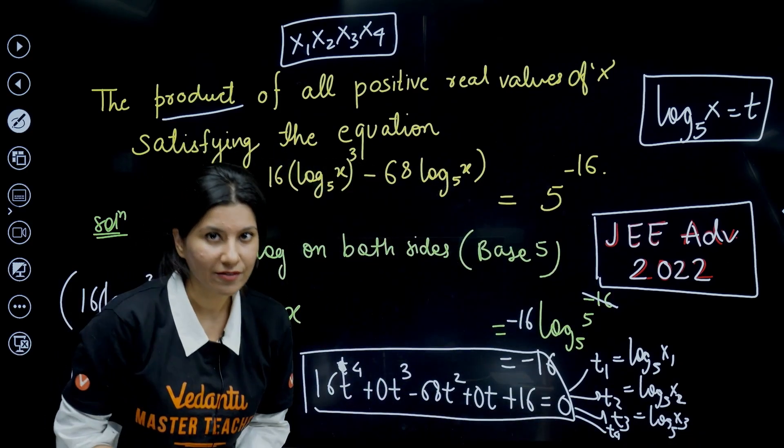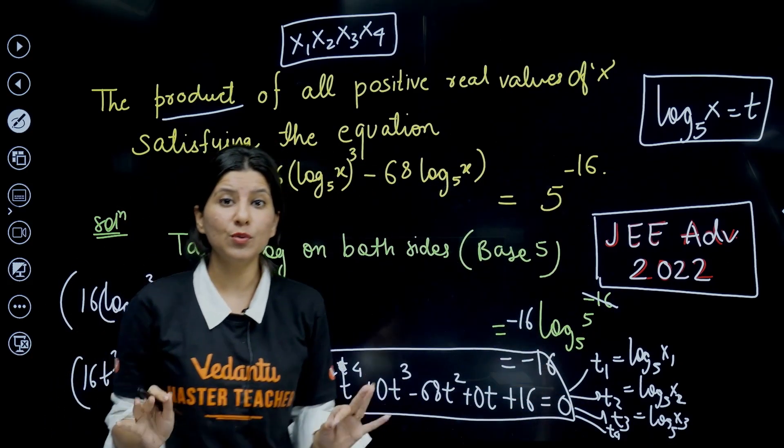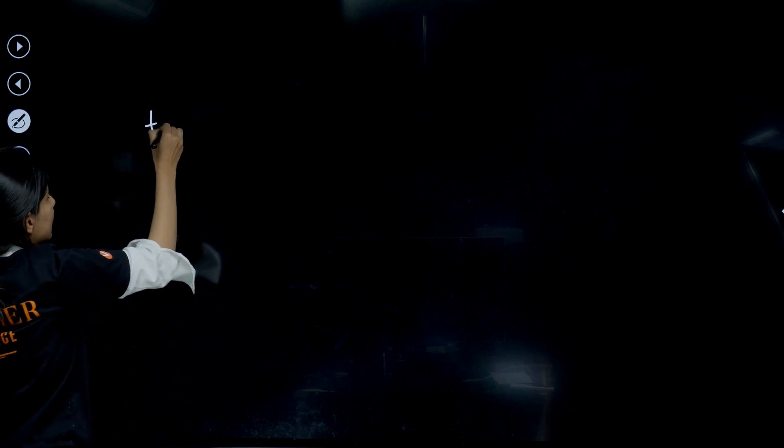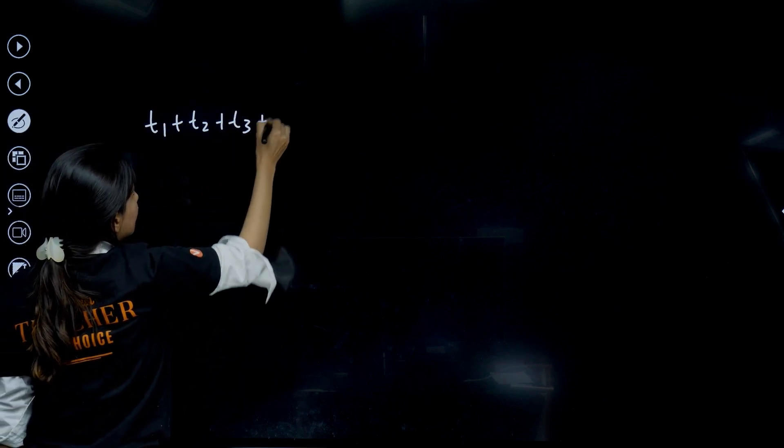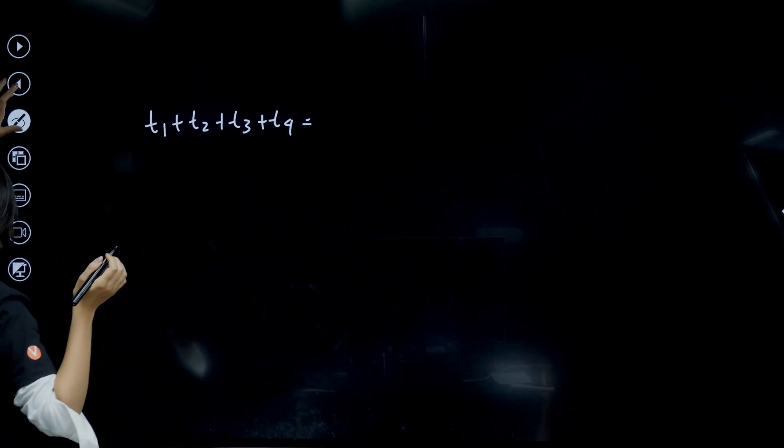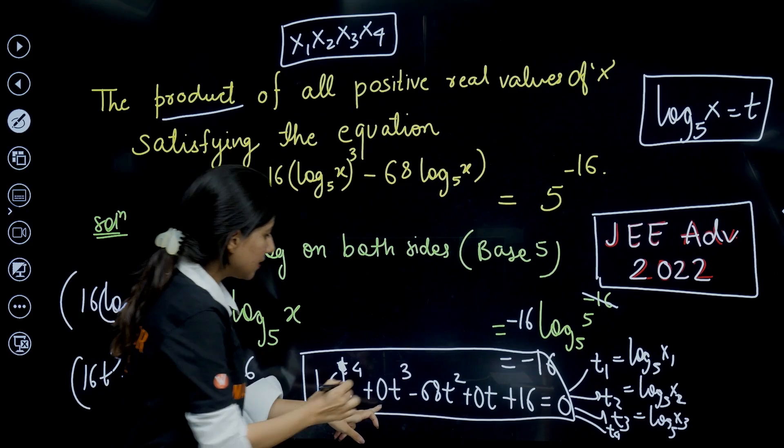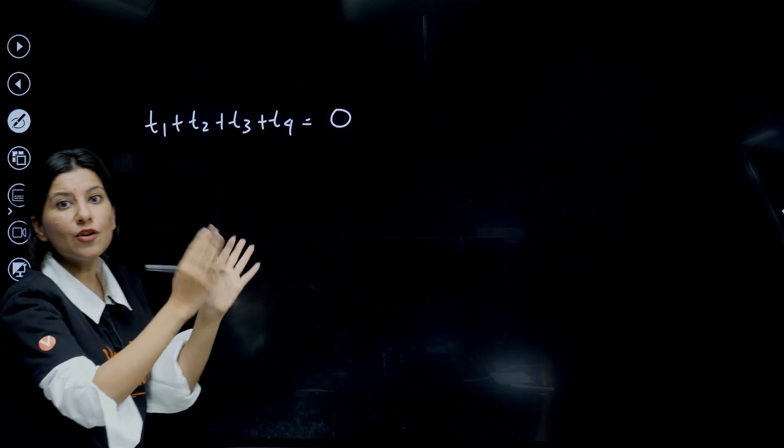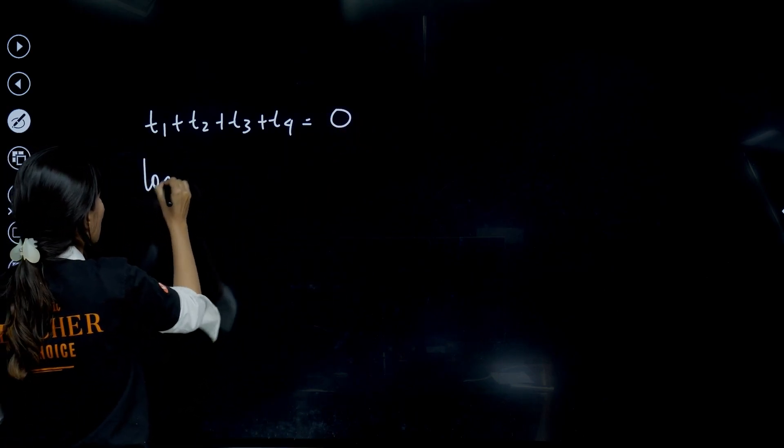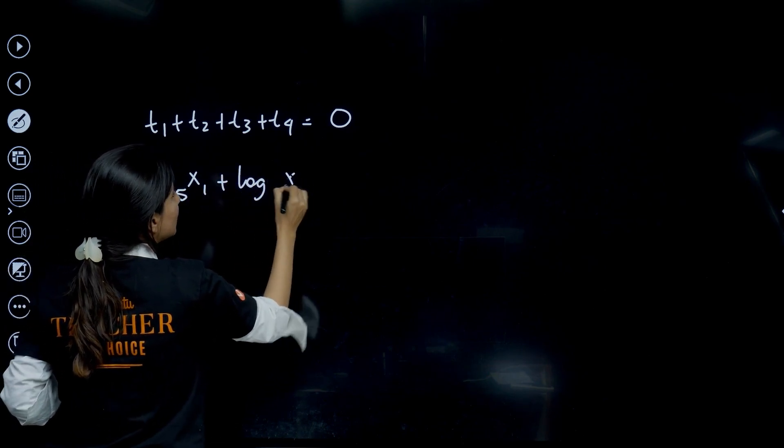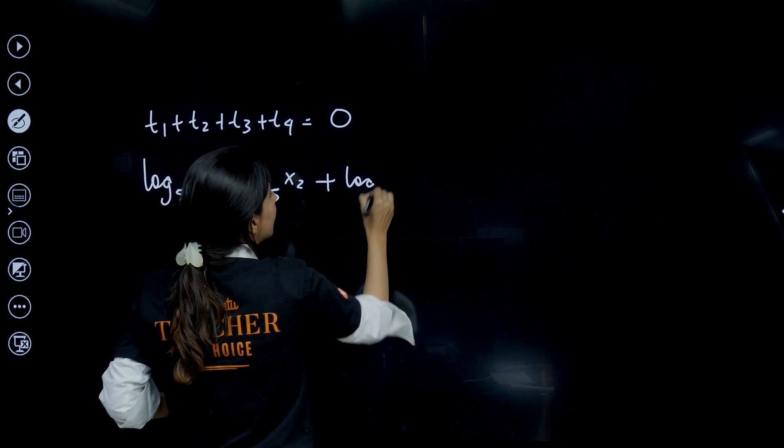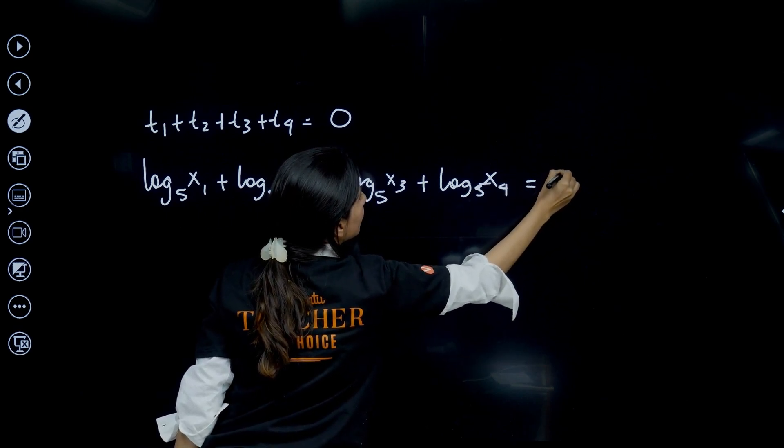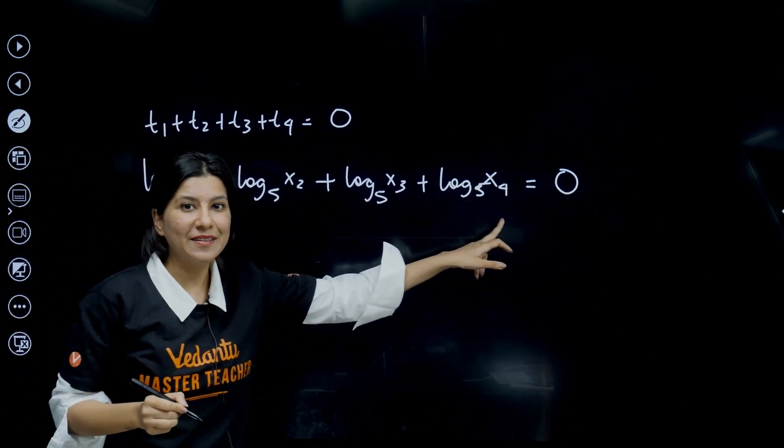If I talk about sum of roots of this equation related to t, t₁ + t₂ + t₃ + t₄ will be equals to minus b by a. Over here you can clearly see that 0 by 16 is minus b by a, so the value will be equals to 0. Now let us plug in the value of t₁ in terms of x₁. That is going to be log of x₁ to the base 5 + log of x₂ to the base 5 + log of x₃ to the base 5 + log of x₄ to the base 5 and this is nothing but 0.